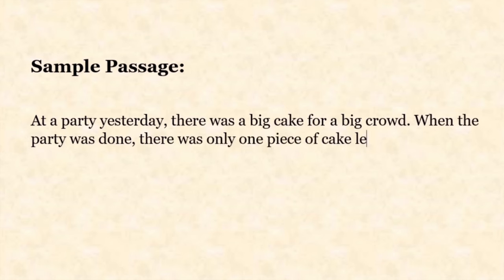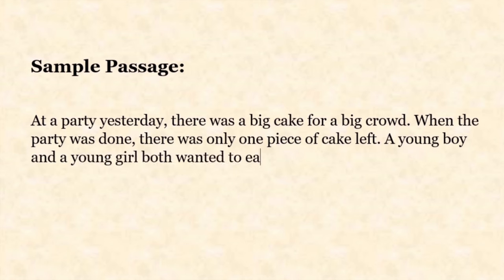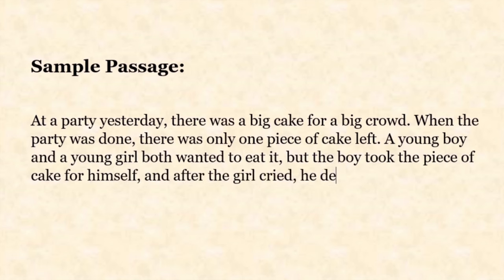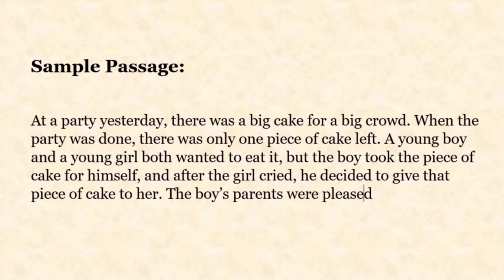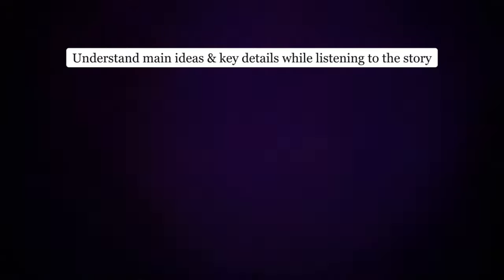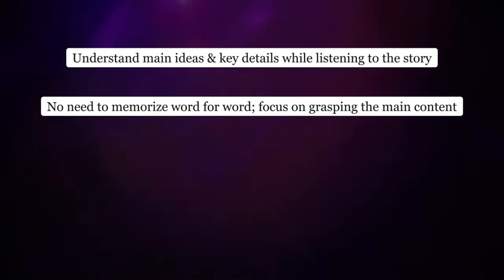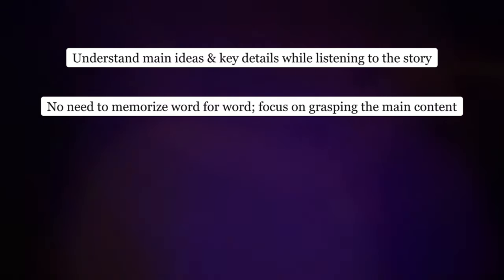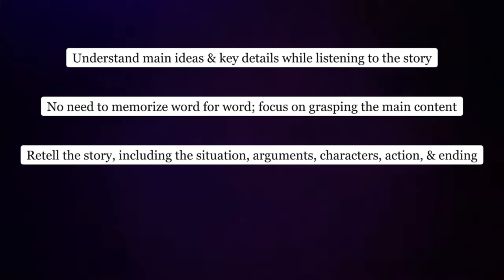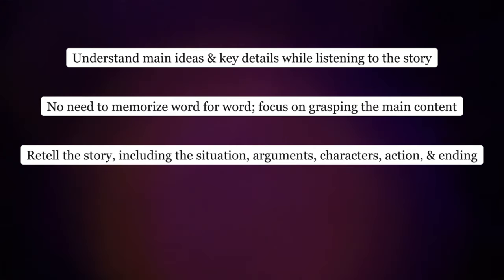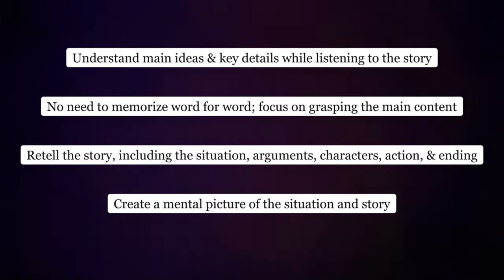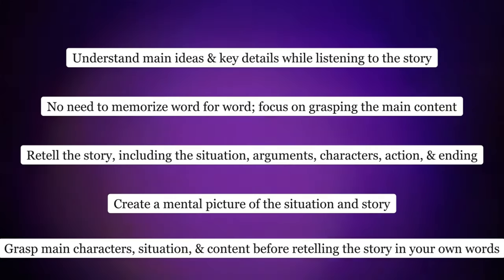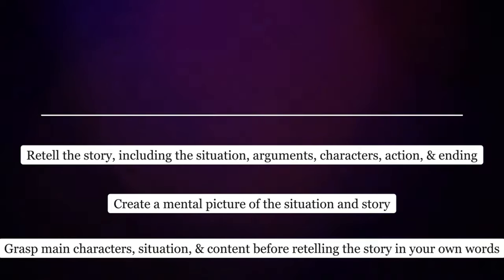When you're listening to the story, make sure you understand the main ideas and the key details. Remember, you do not have to memorize everything word for word — focus more on understanding the main content of the story. Try to retell the story including the situation, arguments, characters, action, and ending. I first used to create a picture of the situation in my mind, understand the characters and content, and then retell the story in my own words. The key points of this story are: there's a birthday party with a cake cutting ceremony, quite a few people gathered, and only one piece of cake was left which both a boy and girl wanted to eat.